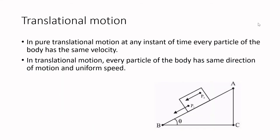Now we will discuss what is translatory motion or translational motion. Here we have in this figure a rectangular block sliding down an inclined plane without any sidewise movement. The block is a rigid body. It moves down the plane in such a way that all particles of the body are moving together. You can see P1 and P2 — two particles are shown in this figure. They both are moving together with that body, that is, they have the same velocity at any instant of time. The rigid body here, that is this block, is having a pure translatory motion.